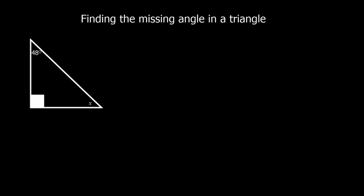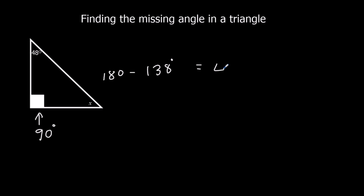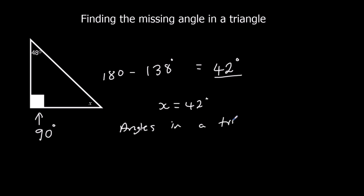Here's a different triangle. This time we've got this square symbol, and what this means is it's 90 degrees — that's a 90 degree angle. So in this example we've got 90 degrees and 48 degrees so far, giving us 138 degrees. Angles in a triangle add up to 180 degrees, so we need to do 180 take away 138, and that's 42 degrees. So x is 42 degrees. Same reason — angles in a triangle add up to 180 degrees. Always give our reason.